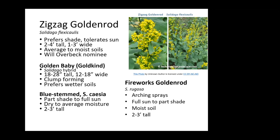Goldenrods do feed a lot of insects in the fall — this is fall-blooming. For pollinators preparing for winter, they can collect a lot of pollen off these plants and store it for the winter.